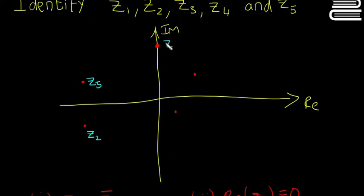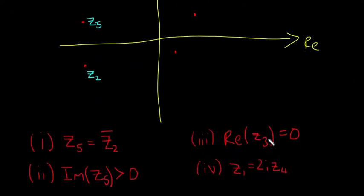So that means this one here is going to be Z3, because the coordinate of this is just going to be, say if this is up three spaces or four spaces, it's going to be plus 4i. There's no real part, because the real part is equal to zero. That's what the piece of information here tells us.